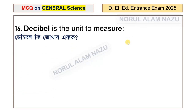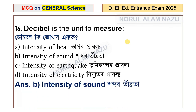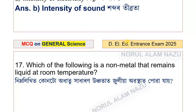Question 16 — this question is very important. Decibel is the unit used to measure: intensity of heat, intensity of sound, intensity of earthquake, or intensity of electricity. The answer is intensity of sound.